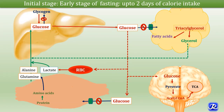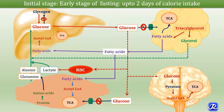The fatty acids released from triacylglycerol breakdown are utilized by adipose tissue itself for energy, as well as by skeletal muscle and liver. Glucagon increases fatty acid oxidation and also decreases fatty acid synthesis.